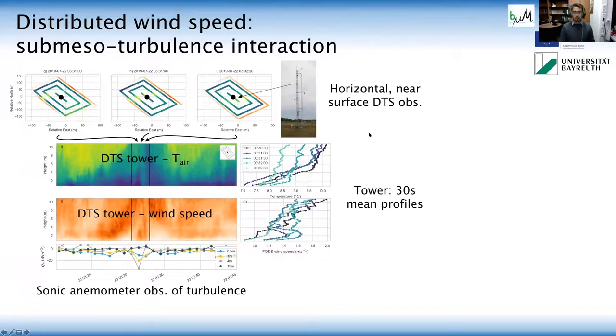But now for kind of the whirlwind tour. So this tower that I showed you is at this black dot here within our array and the array is about 200 meters, by 150 meters wide. Within this then, so that's these near-surface observations I'm showing. They're about a meter and a half off the ground. In the middle here, we have time height cross sections of the tower. So these observations are shown here for air temperature and wind speed. Below that are sonic anemometer observations of the sensible heat flux. And on the right are 30 second mean profiles between the two black lines shown there.